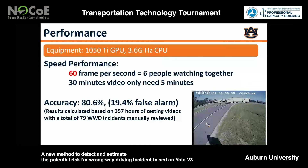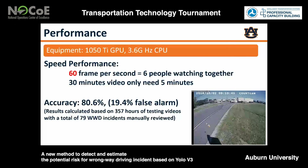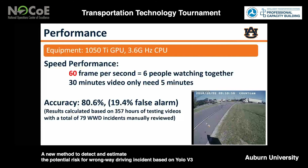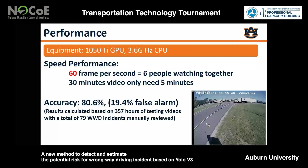As for the performance of our system, we are conducting tests based on a computer equipped with a 1040Ti GPU and 3.6 GHz CPU. The speed of our algorithm can achieve 60 frames per second, which is equal to six people watching videos together. For a 30-minute long video, we only need five minutes to finish all the detection. Based on 357 hours of testing video, we found that the accuracy of our system can achieve 80%, including a 20% false alarm rate. This result is better compared with other existing detection systems, since our system can only be triggered by vehicles instead of other environmental effects.